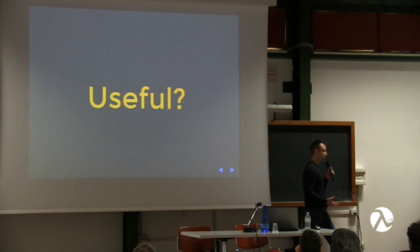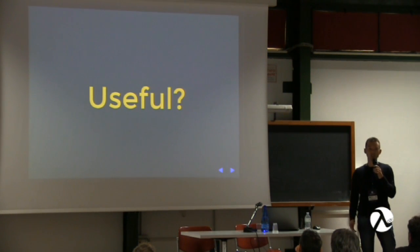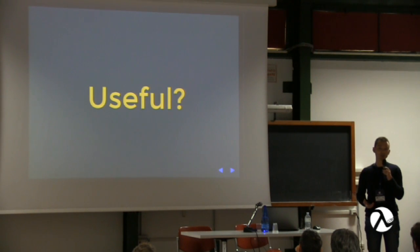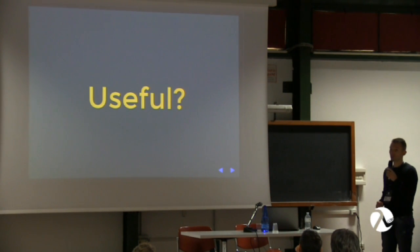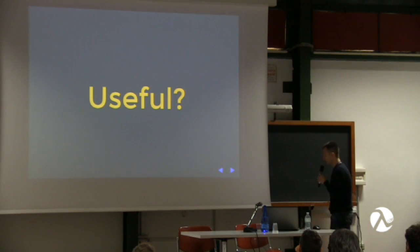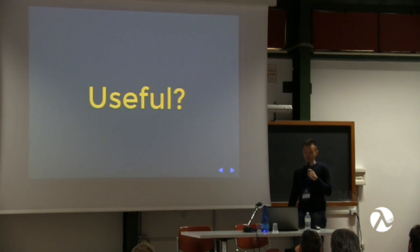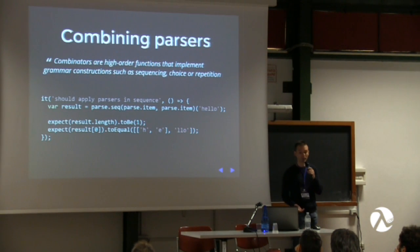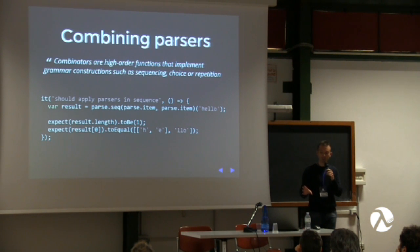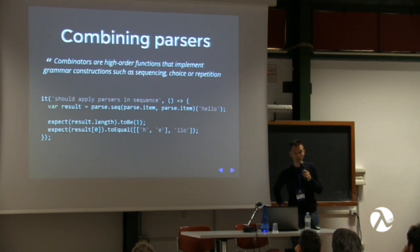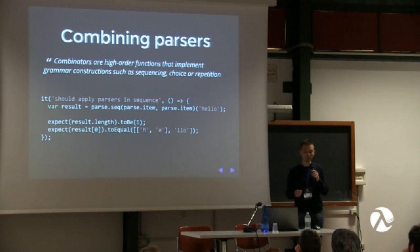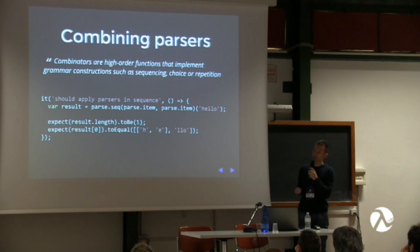But is this primitive parser useful by itself? Not really — if you want to parse a complex grammar, simple parsers alone won't do. We need a way to combine them by writing combinators. Combinators are higher-order functions that implement grammar constructions such as sequencing, choice, or repetition. Our first example implements sequencing: the seq combinator takes two parsers and combines their results as an array.